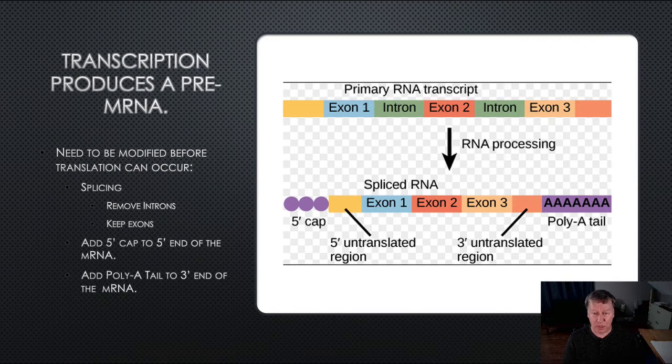Transcription is the first process in central dogma, transcription translation, where we are going from DNA to a protein. In transcription, we're going from DNA to a messenger RNA molecule that will eventually leave the nucleus and find a ribosome and undergo translation to create the protein.